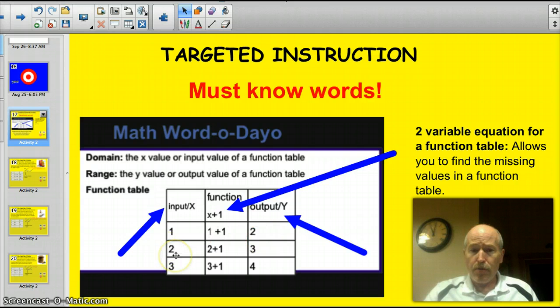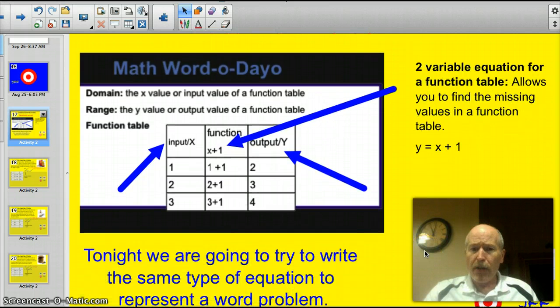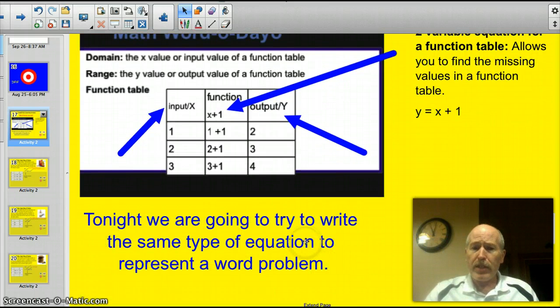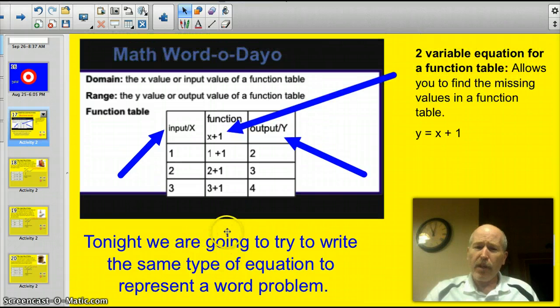So 1, we take that 1 and we add another, the x plus 1, and we got 2. And here x is 2, so we had 2 plus 1 was 3. So we basically found out that the y value, and we kind of work backwards here, the y value is equal to whatever x is plus 1. Remember? It wasn't that long ago. Well, tonight we're going to try to do the same thing, but we're going to write a two-variable equation like this based upon a word problem. And I think that function table is going to help you.